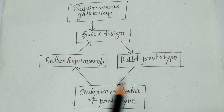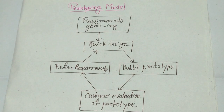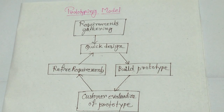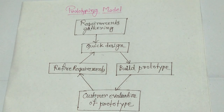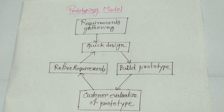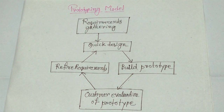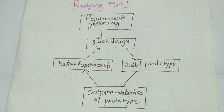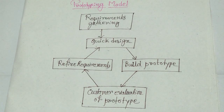The prototyping model requires that before carrying out the development of the actual software, a prototype — a toy implementation of the software — is built. A prototype uses several shortcuts. The shortcut might involve using inefficient or inaccurate dummy functions. For example, a shortcut implementation of a function may produce the desired result by using a table lookup rather than by performing the actual computation. A prototype usually turns out to be a very crude version of the actual system, possibly exhibiting limited functional capability, low reliability, and inefficient performance as compared to the actual software.